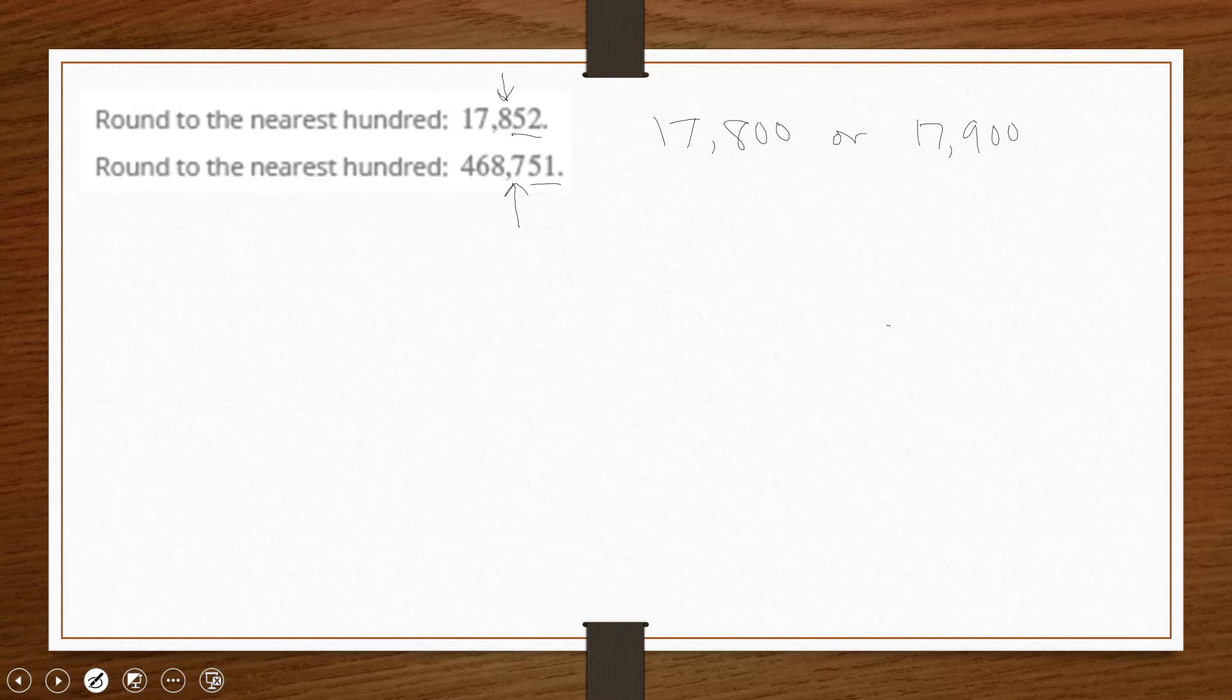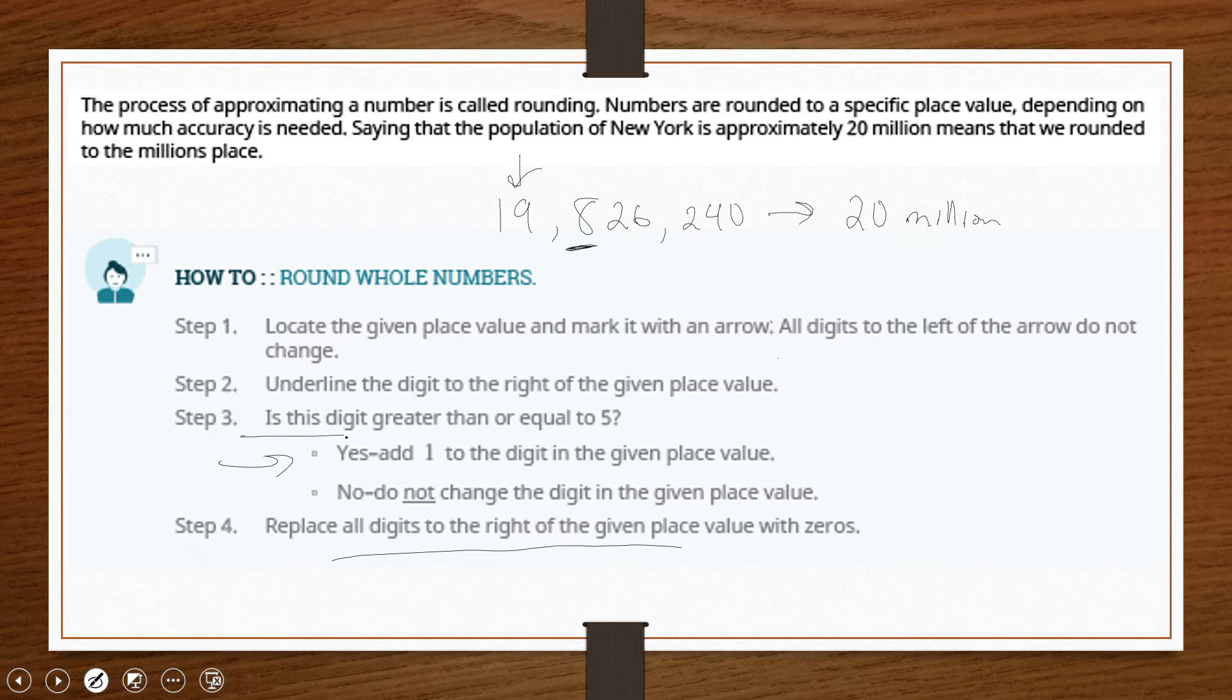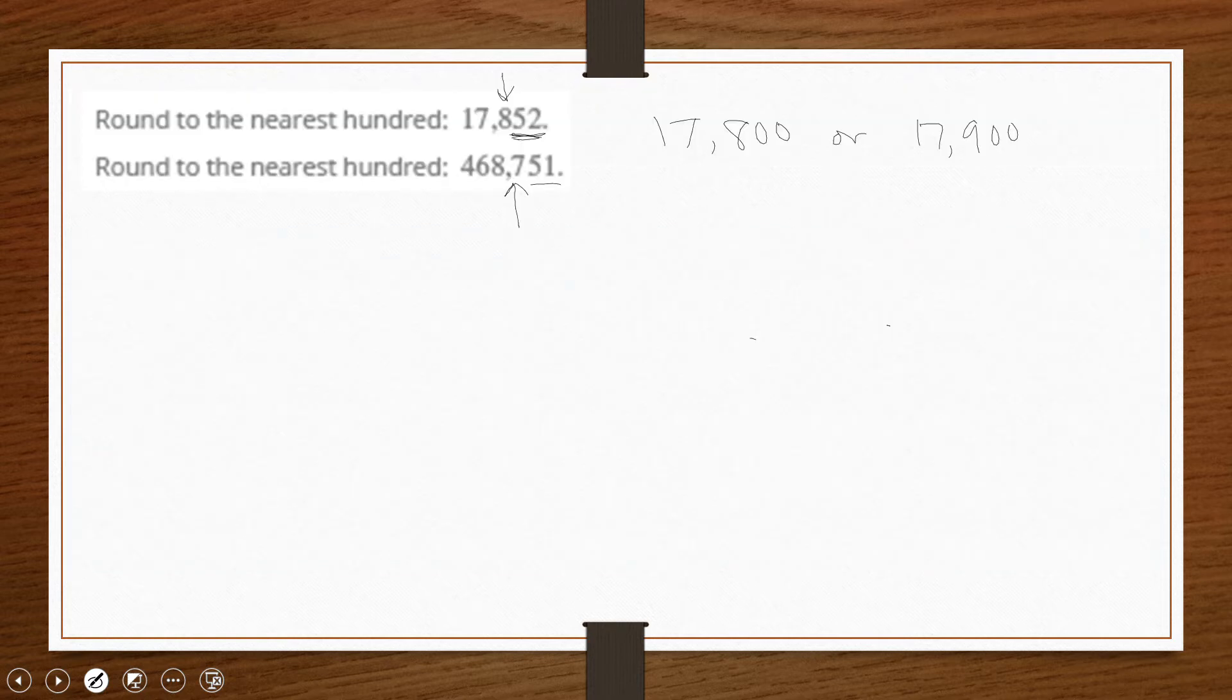That's all we're differentiating between. Is this value going to be closer to 17,800 or 17,900? And the answer is simply which one on the number line that this is closest to by virtue of the digits to the right of the place value we're interested in. So here we again say the heuristic is this rule about whether or not the digit is greater than or equal to five.